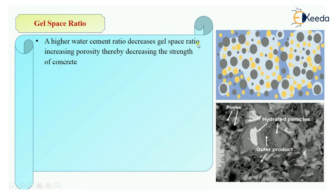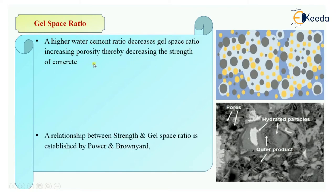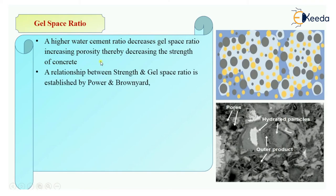Because of the decreasing gel space ratio, there will be increased porosity, and because of increasing porosity it will decrease the strength of concrete. In summary: a higher water-cement ratio decreases the gel space ratio, which increases porosity, which thereby decreases the strength of concrete.